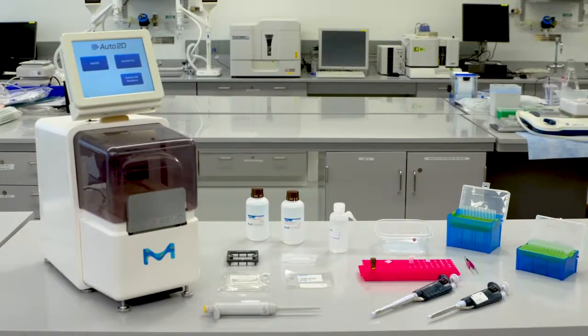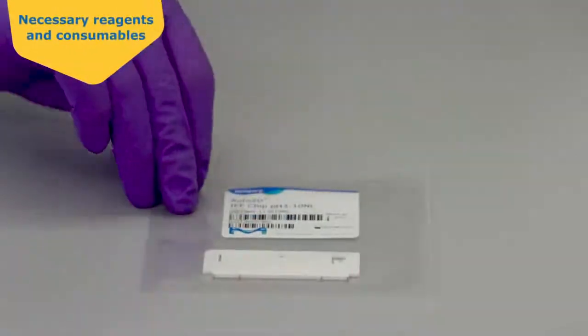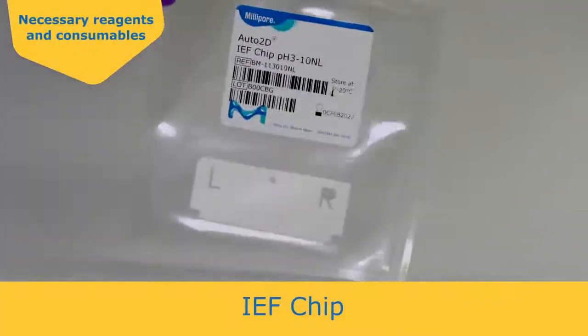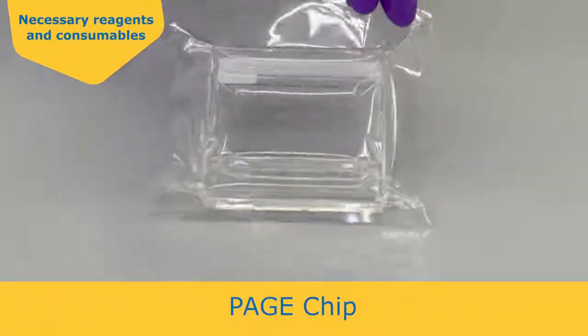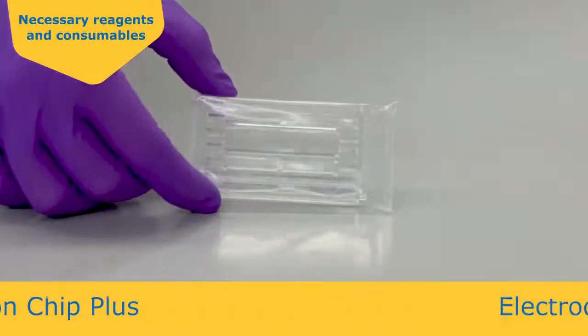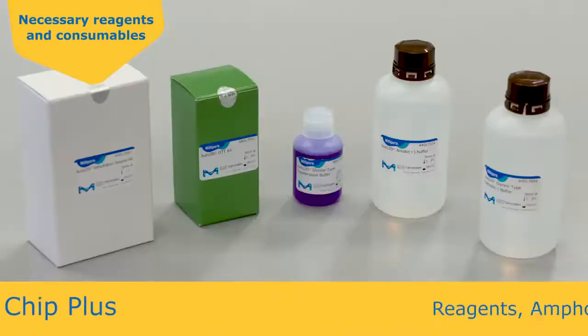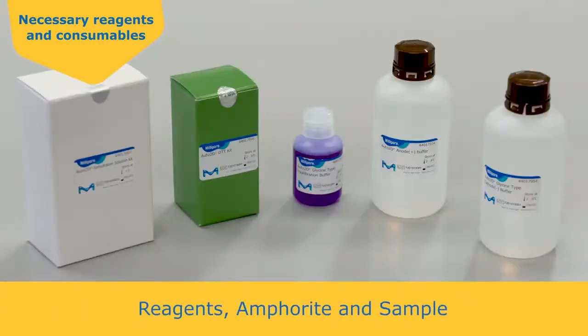First, gather all of the supplies needed to run the Auto2D device, including the IEF chip, PAGE Chip, Solution Chip Plus, Electrode Chip Plus, reagents, ampholyte, and protein sample.